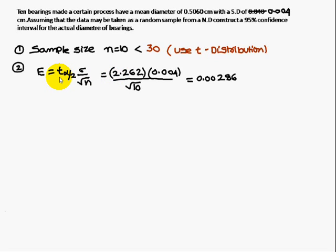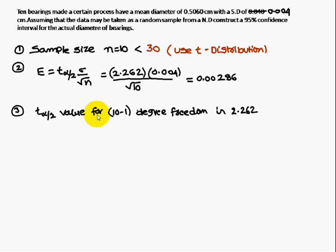The t α/2 value for 10 minus 1 degree of freedom is 2.262. If n is equal to 10, the t α/2 value, how will you get it? For n minus 1, that is nothing but 10 minus 1 degree of freedom, if you look at that one, that is 2.262.